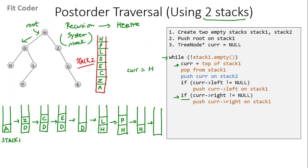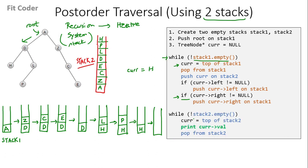In the next iteration, we check while stack1 is empty — the stack is empty now, so the while loop terminates. Then we have another while loop in which we pop all the elements from stack2 and print them. This loop runs till stack2 is not empty — we check the top element, print it, and then pop it. So the elements printed are H, P, L, D, E, C, Z, A.